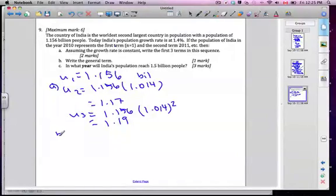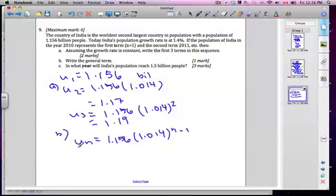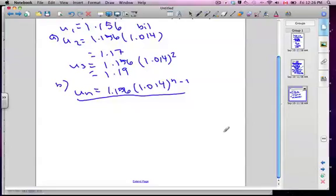It's kind of nice to do the first three terms because then you get an idea of what this pattern is doing. The general term is easy from there. So UN, it's geometric. So we start with U1, which we already know, 1.156, and our ratio is 1.014 to the power of N minus 1. That was easy. That's already number C.